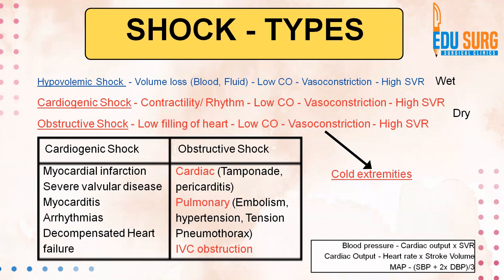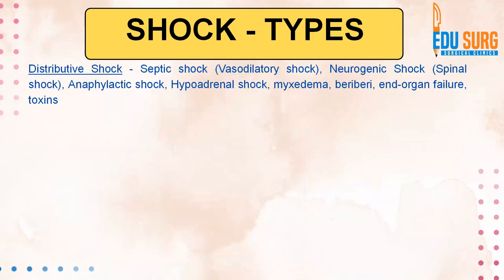So all of these can lead to obstructive shock. To summarize: volume loss leading to hypovolemia, cardiac problems leading to cardiogenic shock, pericardiac problems leading to obstructive shock. Now coming to distributive shock, we are looking at septic shock or vasodilatory shock, neurogenic shock, anaphylactic shock, hypoadrenal, myxedema, beriberi, organ failure, and toxins.